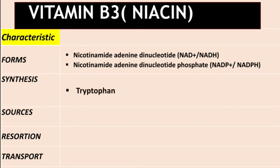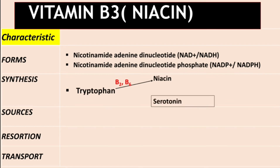Regarding synthesis, Vitamin B3 or niacin is synthesized from the neutral amino acid tryptophan. This happens in the presence of two other vitamins: Vitamin B2 (riboflavin) and Vitamin B6 (pyridoxine). There is also another neurotransmitter called serotonin — also known as 5-hydroxytryptophan — which is likewise a derivative of tryptophan, and its synthesis also requires tetrahydrobiopterin and Vitamin B6.